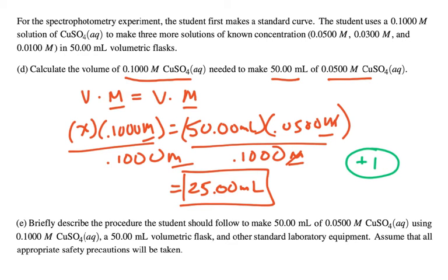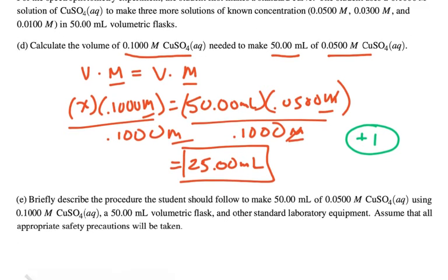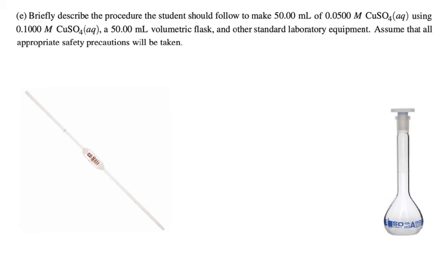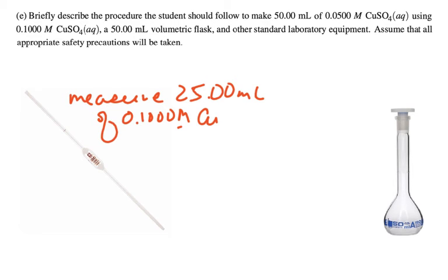Now, part E says, briefly describe the procedure the student should follow to make this 50 milliliters of 0.05 molar copper sulfate using the 0.1 molar copper sulfate and a 50 milliliter volumetric flask and other standard laboratory equipment. Assume that all appropriate safety precautions will be taken. So, what we need to do is measure out that 25 milliliters of the 0.1 molar solution, copper solution, and to do this, we're going to measure 25.00 milliliters of the 0.1000 molar copper sulfate. And to do this, we're going to measure that very carefully. So, one of the best ways to do this is with a volumetric pipette.